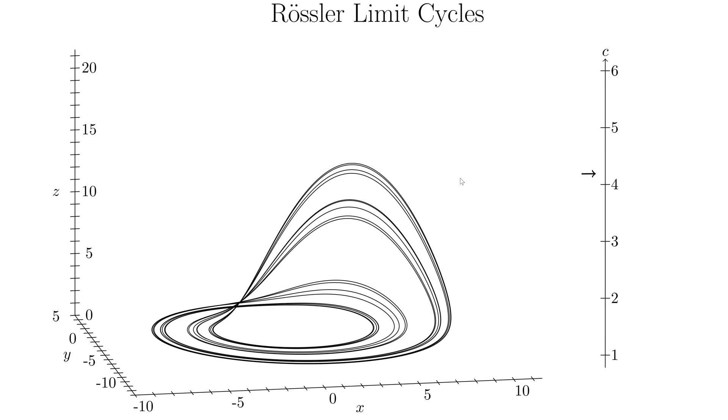These period doubling bifurcations keep happening faster and faster and faster. And they actually happen so quickly that an infinite number of them happen. An infinite number of period doubling bifurcations happen with a finite change in the parameter c. And so how you kind of end up forming the strange attractor is you have a limit cycle that splits itself to kind of half into twice its length an infinite number of times. And then it's becoming a space filling curve and forms the strange attractor.